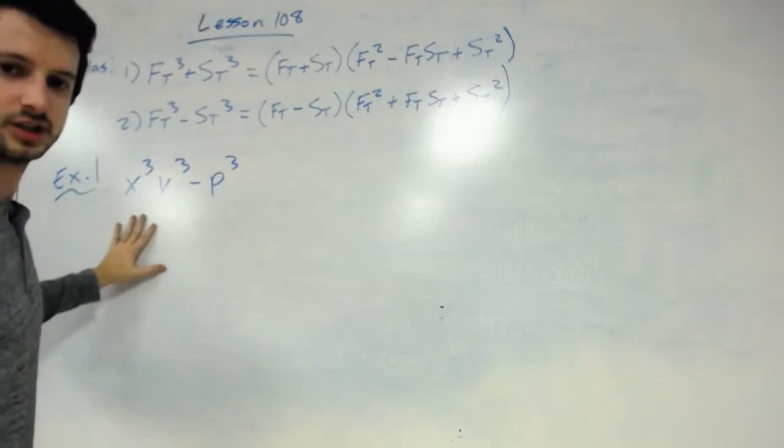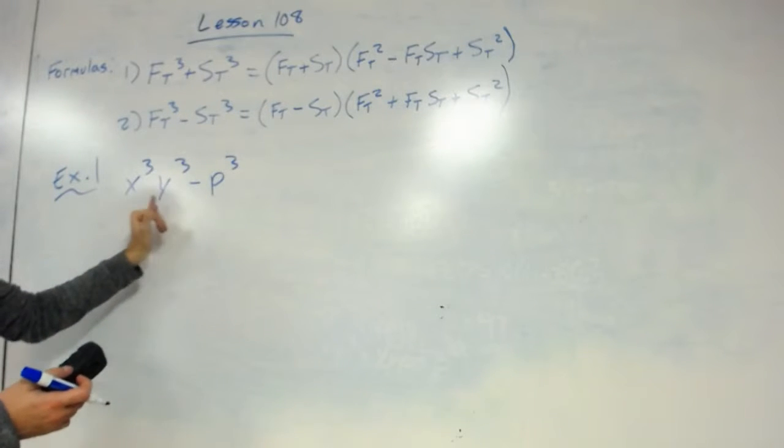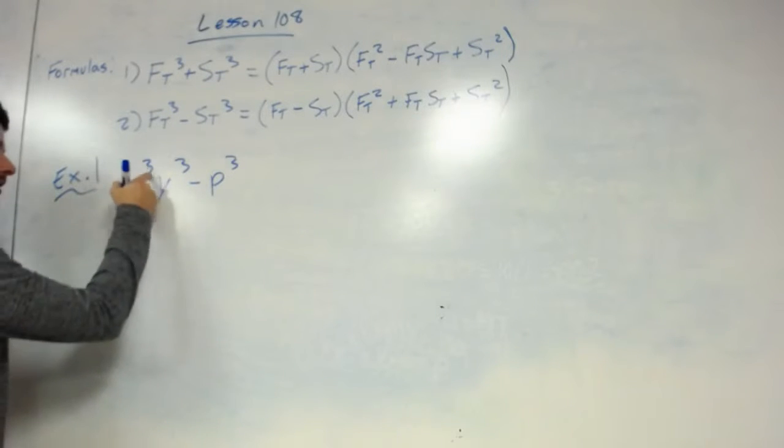It's actually very simple. No math really at all, just plugging in. Example one, it wants us to factor x cubed times y cubed minus p cubed. Now, what we are going to do first is factor out the cubed.